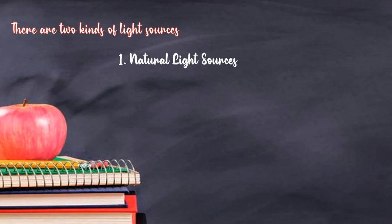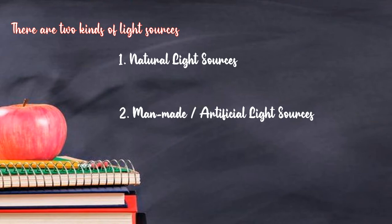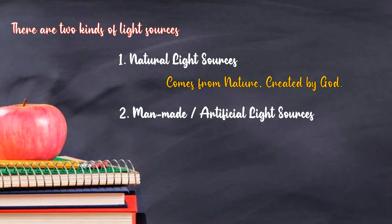There are two kinds of light source. The first is natural light source, and the second is man-made or artificial light source. Sumber cahaya yang pertama yaitu natural light source, dan yang kedua adalah man-made. Natural light source comes from nature, created by God — sumber cahaya yang berasal dari alam, ciptaan Allah subhanahu wa ta'ala. Man-made or artificial light source is created by human — dibuat oleh manusia.